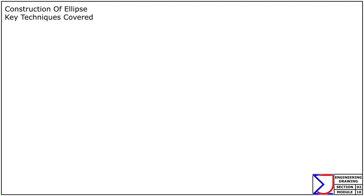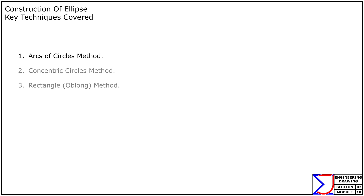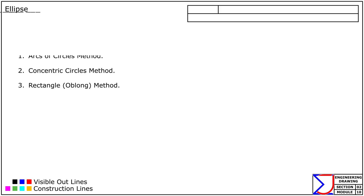In this module we will construct an ellipse using the given dimensions of the major and minor axes. The key techniques we will cover are: one, arcs of circles method; two, concentric circles method; three, rectangle or oblong method. By mastering these methods you will develop the ability to construct ellipses accurately and confidently.